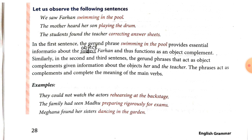Now, some more examples are given here. First: 'They could not watch the actors rehearsing at the backstage.' Here, 'rehearsing at the backstage' is the object complement of the object 'the actors'. Second: 'The family had seen Madhu preparing rigorously for exams.' Here, 'preparing rigorously for exams' is the object complement of the object 'Madhu'. Third: 'Meghna found her sisters dancing in the garden.' Here, 'dancing in the garden' is the object complement of the object 'her sisters'.